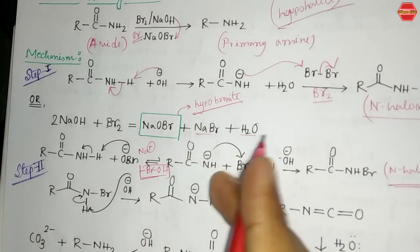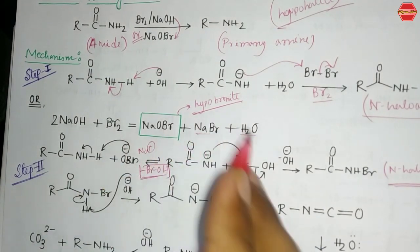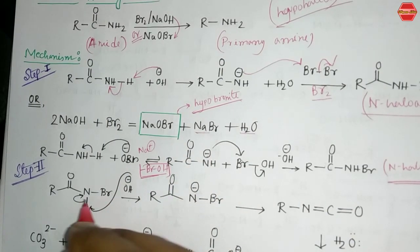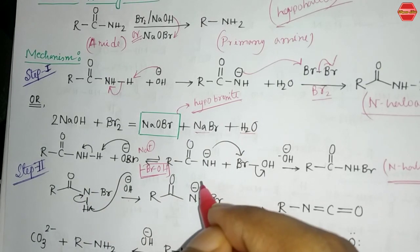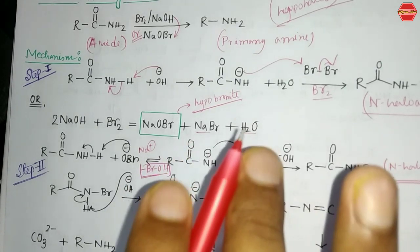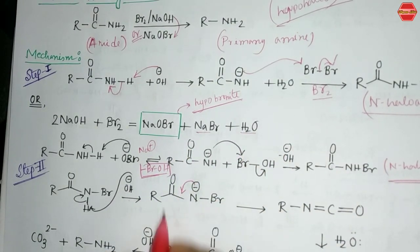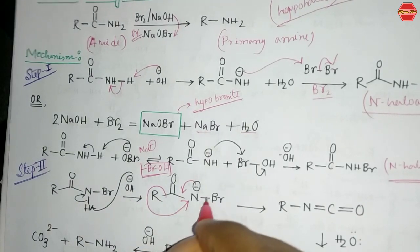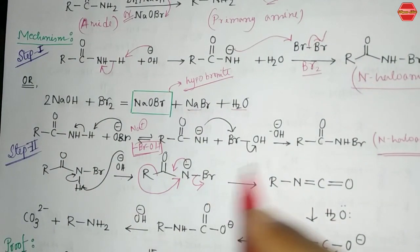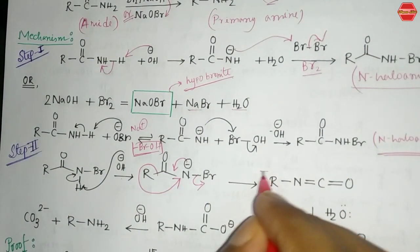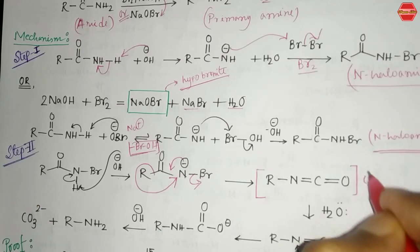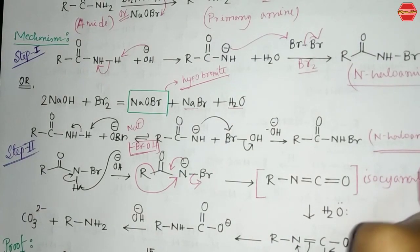In step two, the important rearrangement takes place. OH⁻ abstracts a proton from the nitrogen center, creating a negative charge on nitrogen. The R group then migrates to the nitrogen center, and Br⁻ leaves as the leaving group.